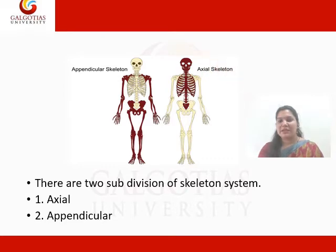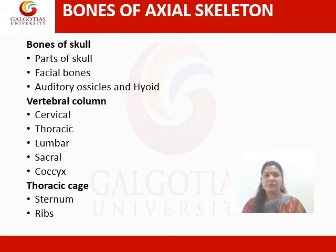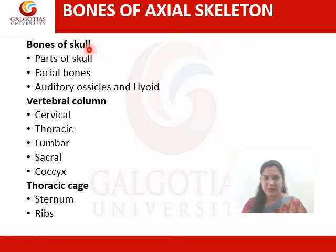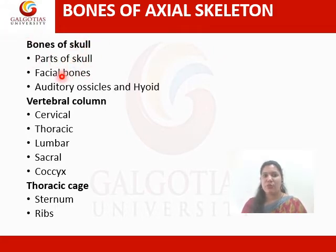Let us discuss about the axial skeleton. There are different bones in the axial skeleton which includes bones of skull. In the skull there are bones of the head skeleton, bones of the facial skeleton, bones of the ear ossicles and one hyoid bone. These comprise the skull area.